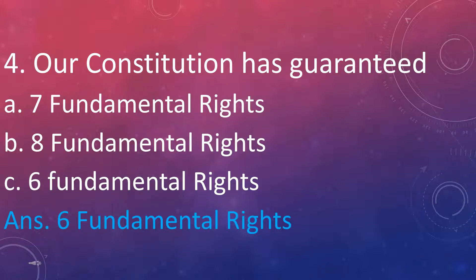Number four: our constitution has guaranteed — option A, 7 fundamental rights; option B, 8 fundamental rights; option C, 6 fundamental rights. Can you remember what we have studied in this lesson? We have studied that our constitution has guaranteed 6 fundamental rights: right to equality, right to freedom, right against exploitation, right to freedom of religion, cultural and educational rights, and the right to constitutional remedies. The answer is 6 fundamental rights.